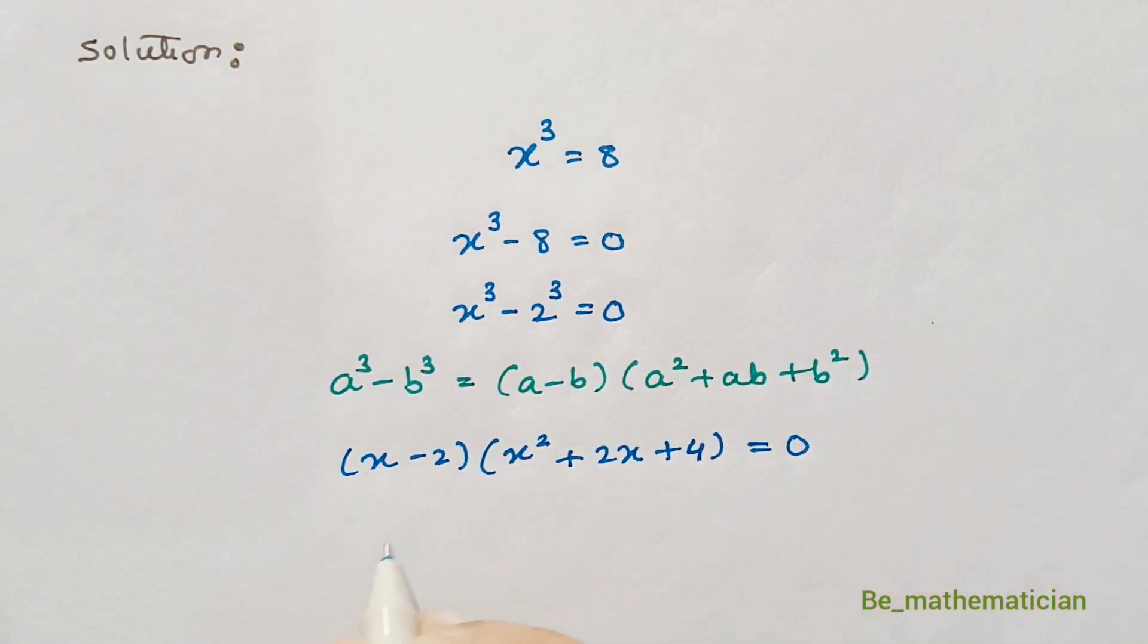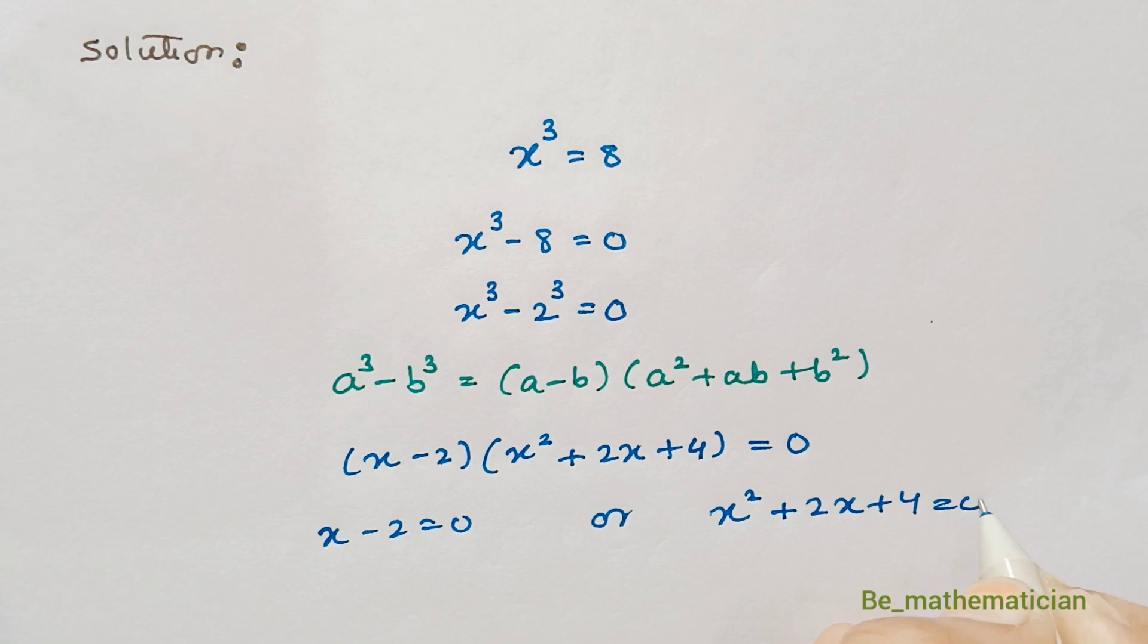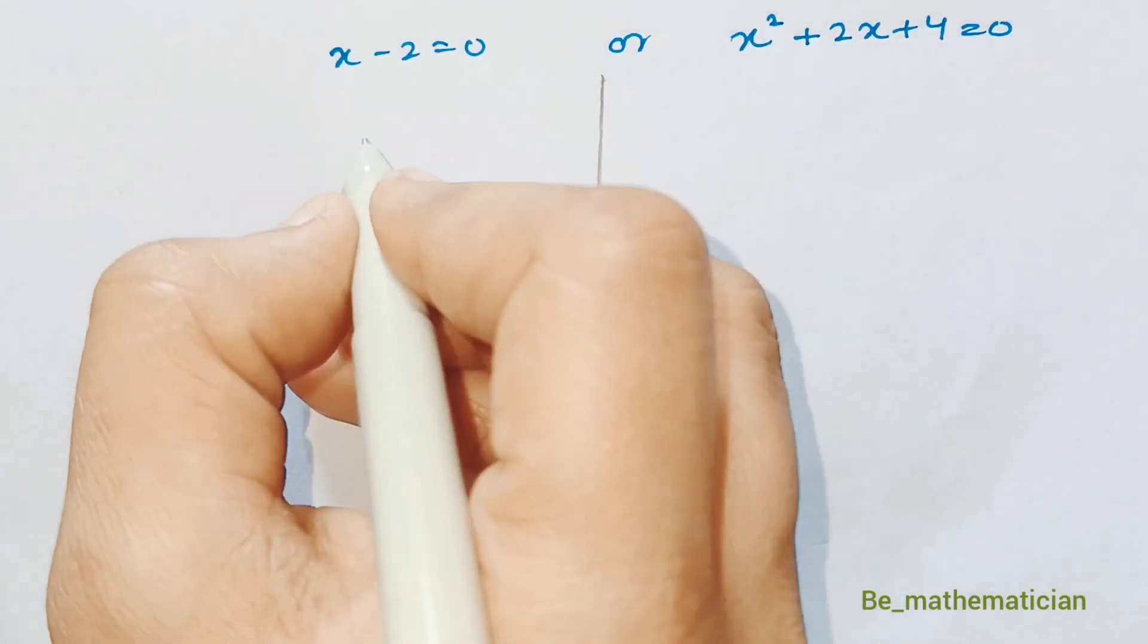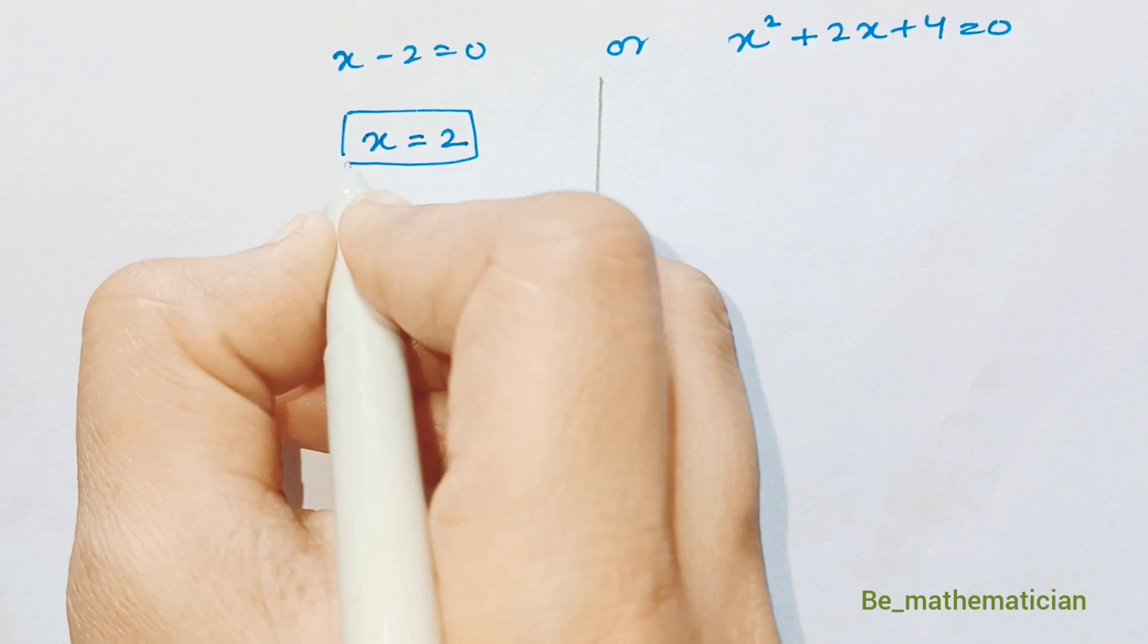So here we have 2 terms in multiplication equal to 0. That means either x minus 2 is equal to 0 or x square plus 2x plus 4 is equal to 0. x minus 2 equals 0 means x is equal to 2. It is our first value of x.